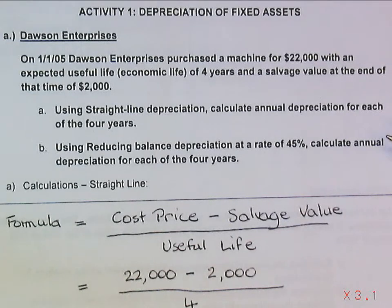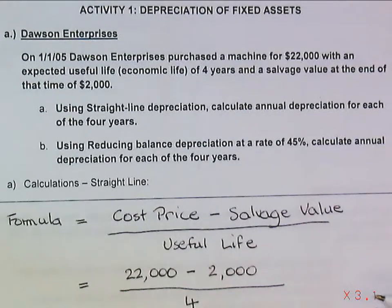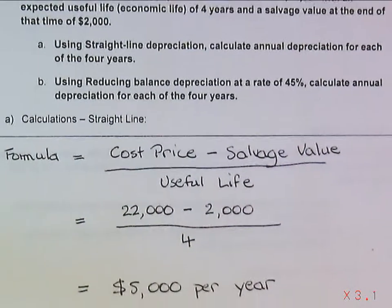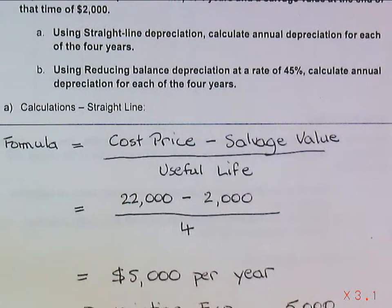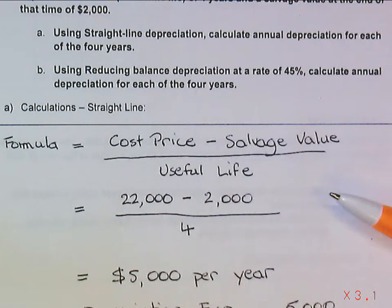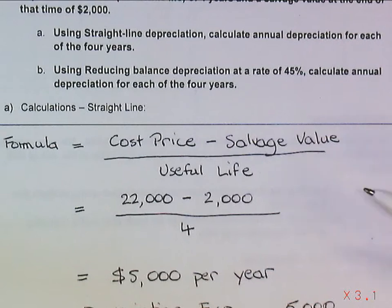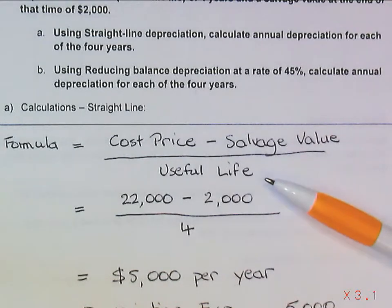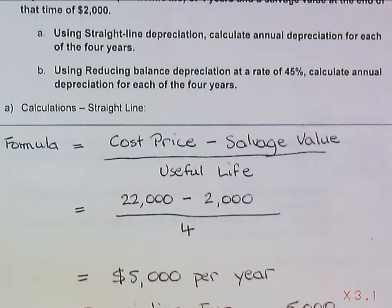Part A of that question involves using straight-line depreciation, and I've already written out the solution for part A, so you can see it down here. The formula for straight-line depreciation is cost price — that is the price that we paid for the machine not including GST — less the estimated salvage value at the end of its useful life, divided by the number of years of useful life.